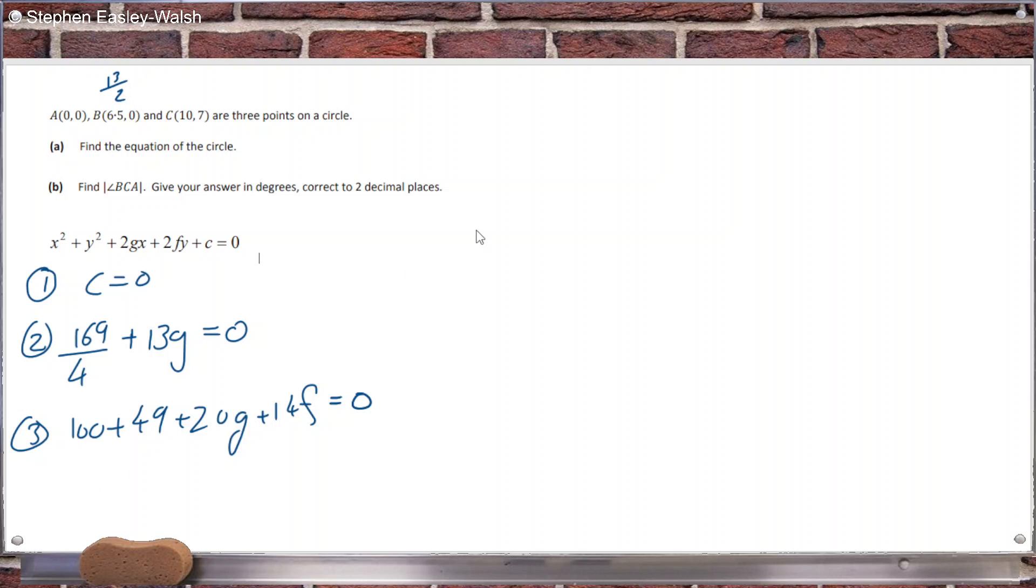I think I'm practically done because that second equation can give me the G. 169 divided by 4 divided by 13, so this gives me G is equal to 13 over 4. And then I can sub that in to get the F. So if I sub that in, let me see what I get.